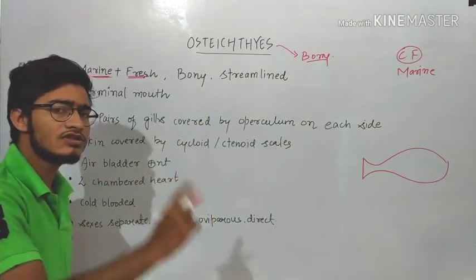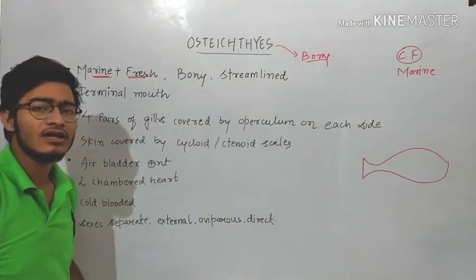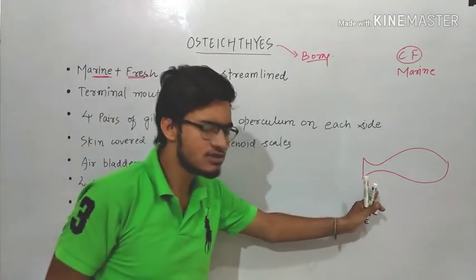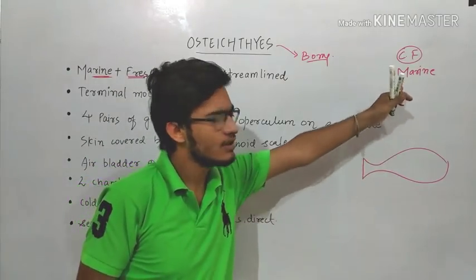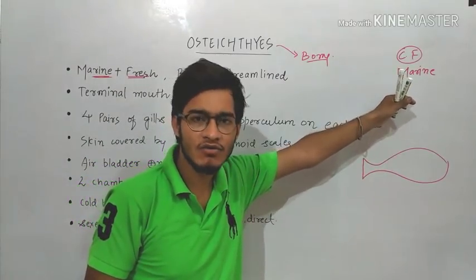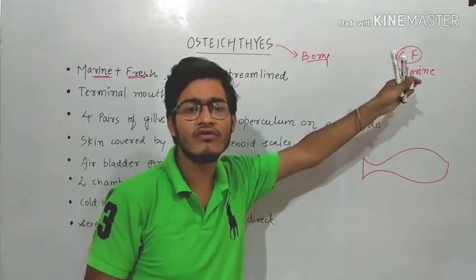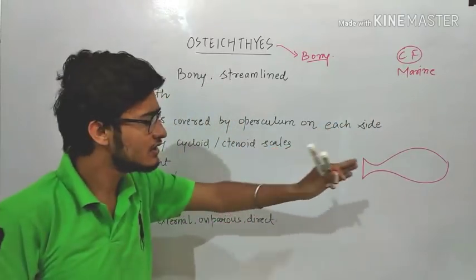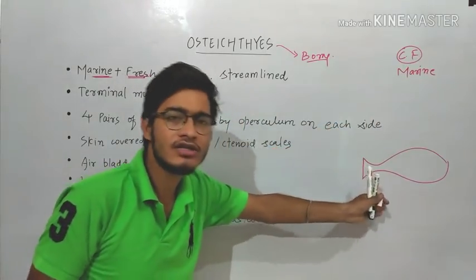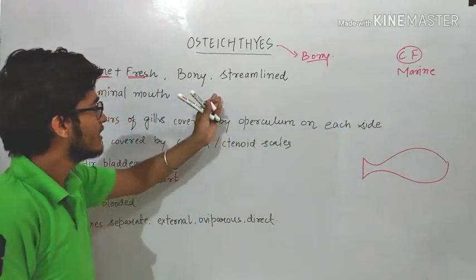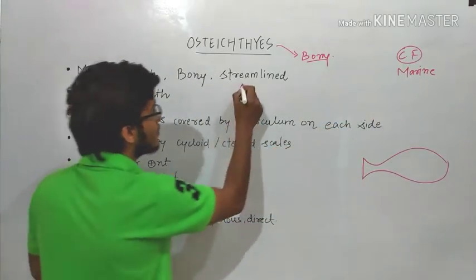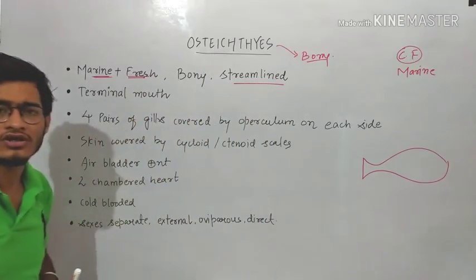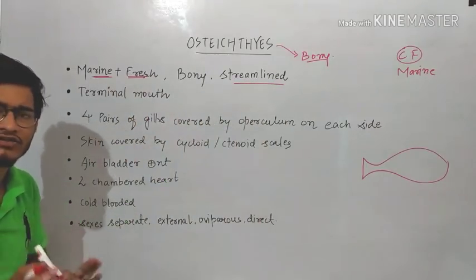So this is the first character and the first difference as well. The body is streamlined in case of cartilaginous fishes, and the body is streamlined in case of bony fishes as well — this character is the same.